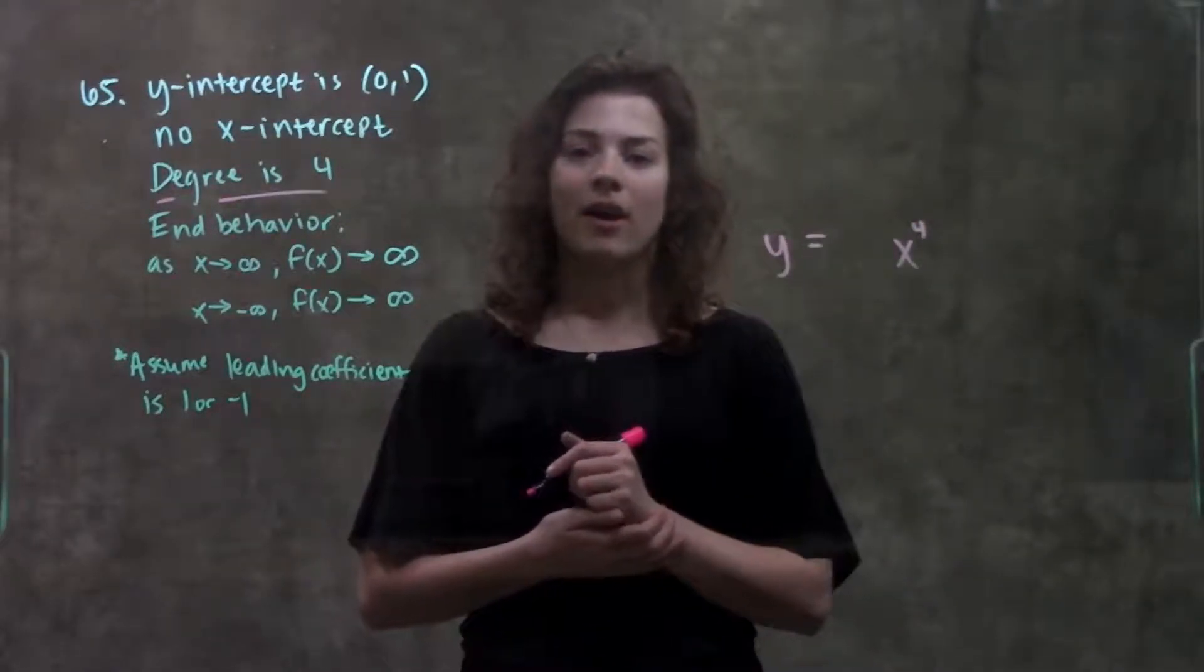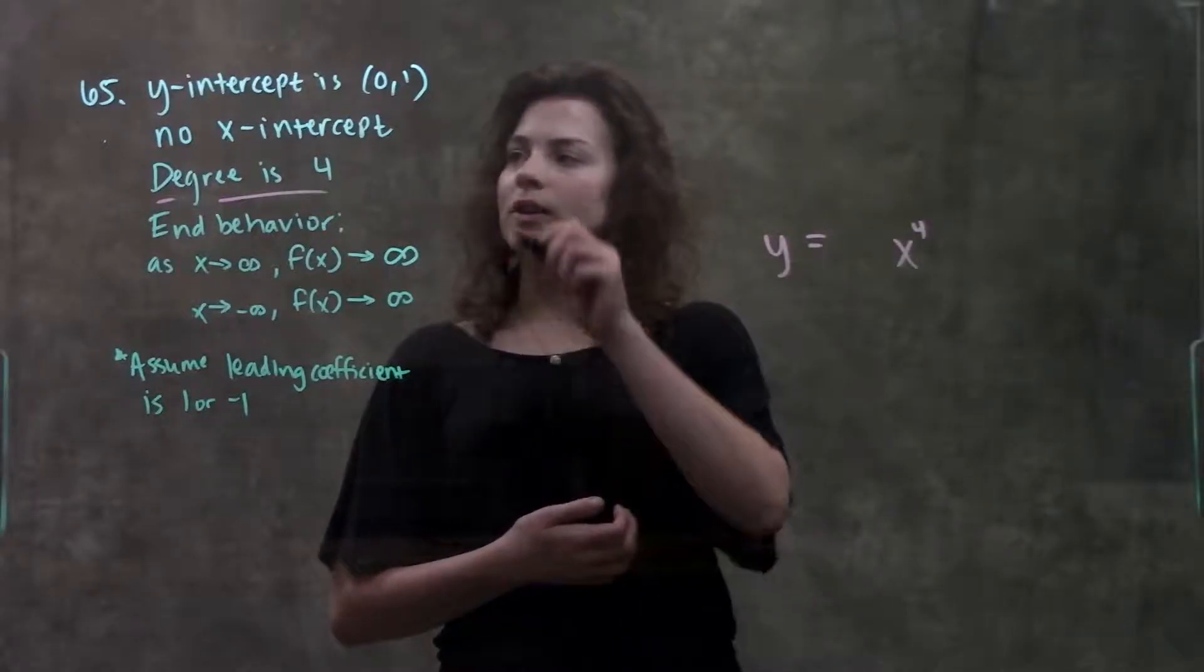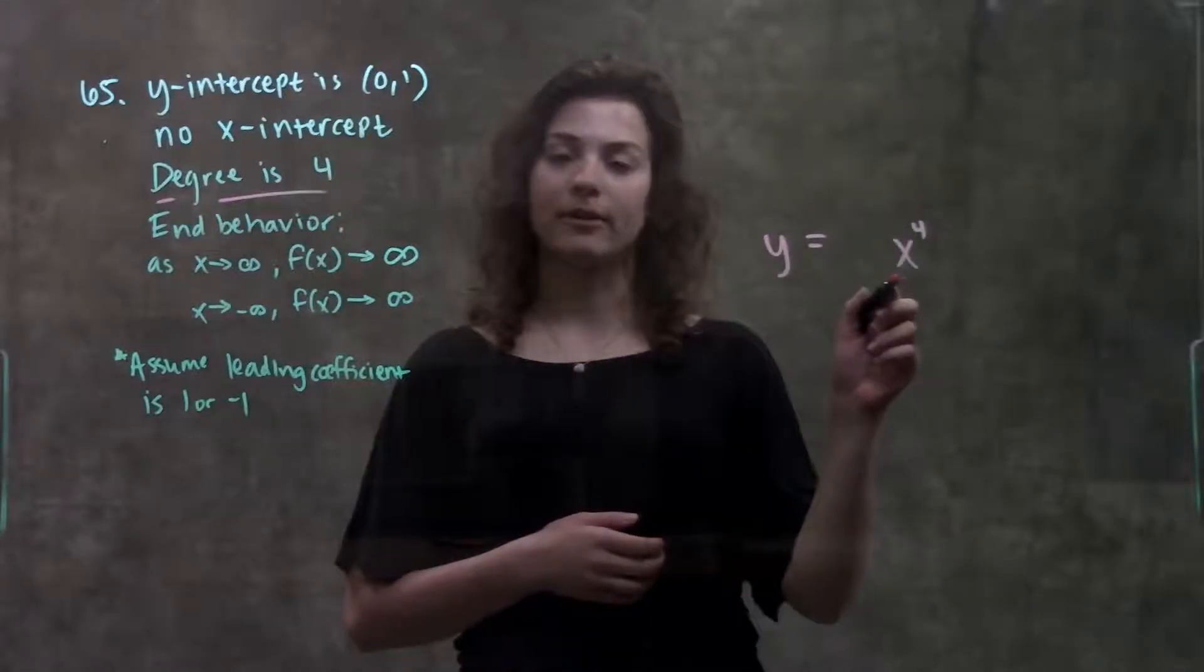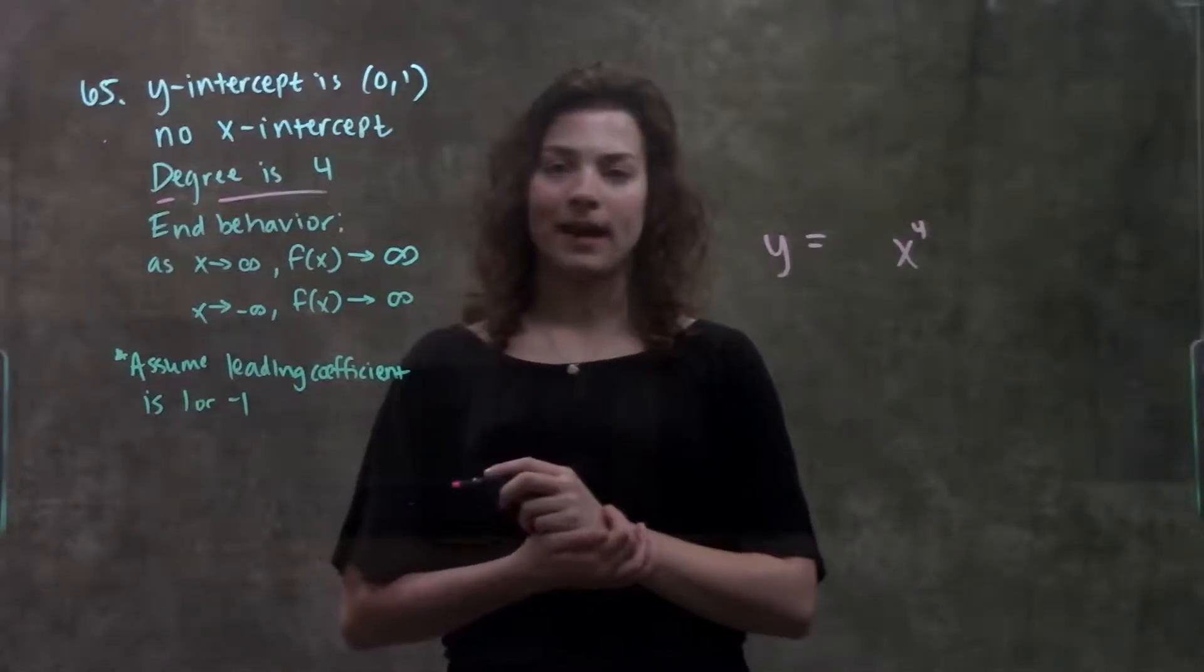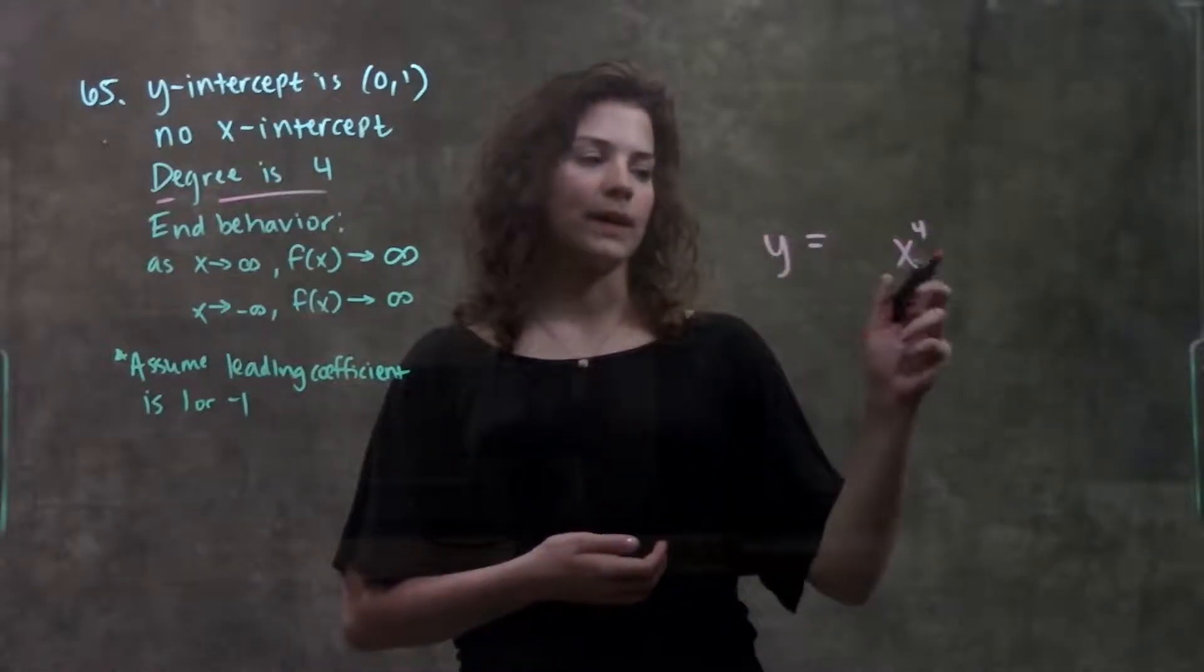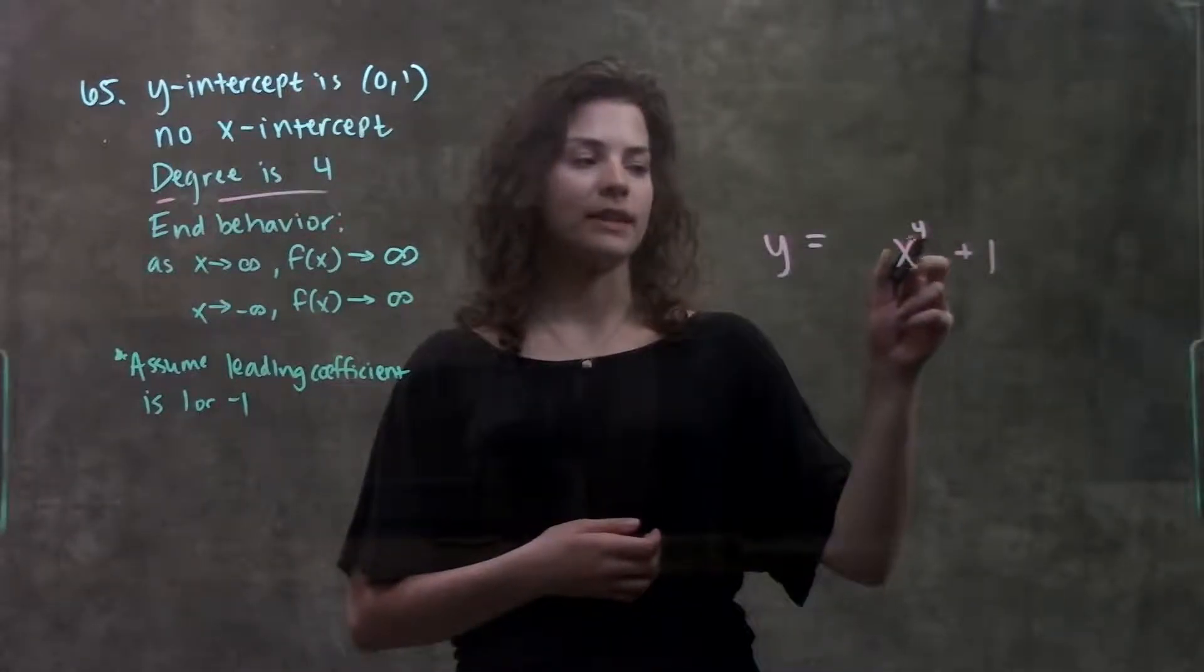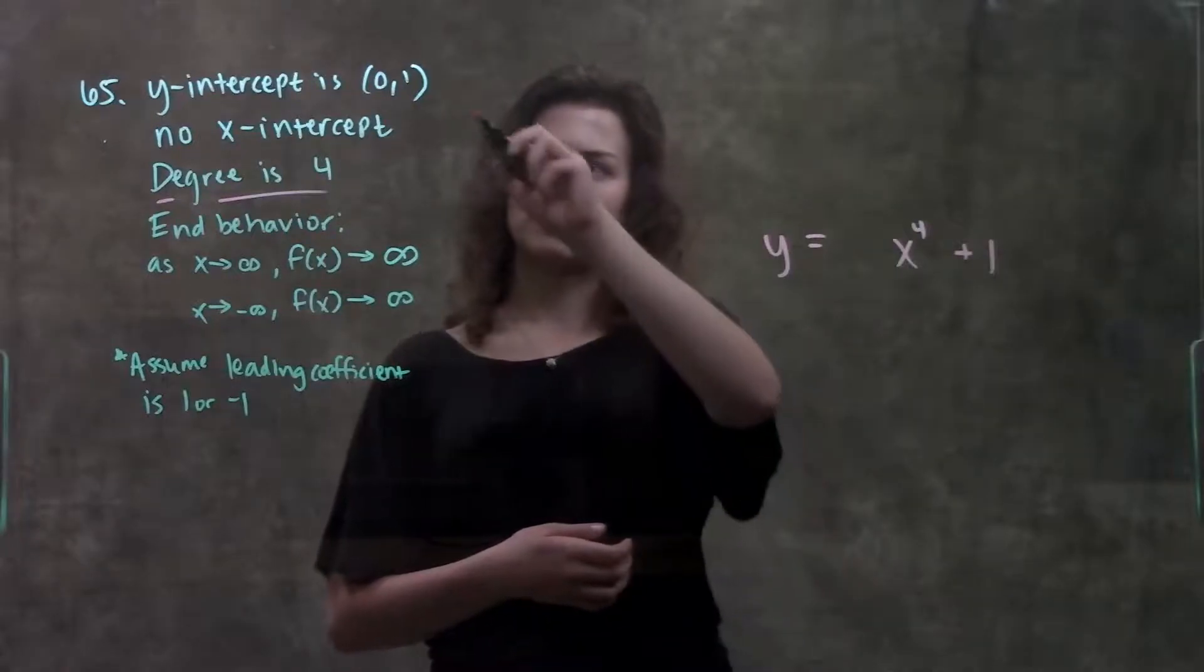Alright, next thing I'll look at are my x and y intercepts. So, they tell me that my y intercept is (0, 1). So, that means if I were to plug 0 in for x, I get 1 as my output for y. So, I can just write that as x to the 4th plus 1. If I were to plug in 0 for x here, I'd get 0 plus 1. That'd give me my y intercept.